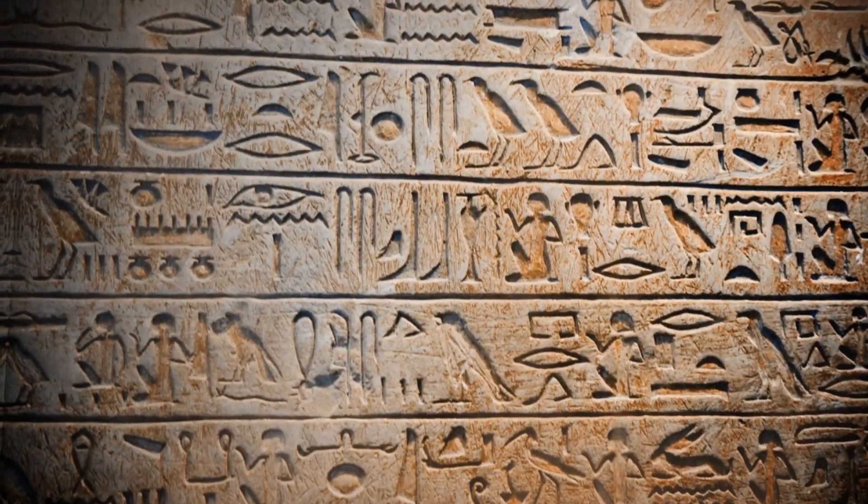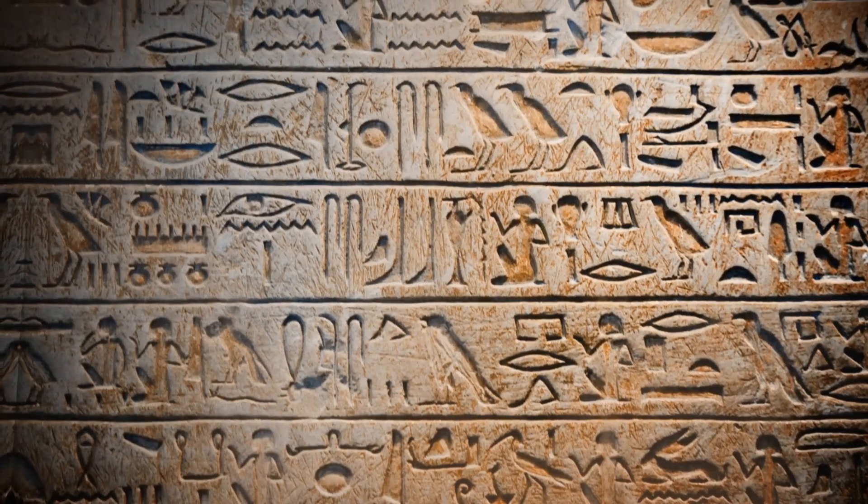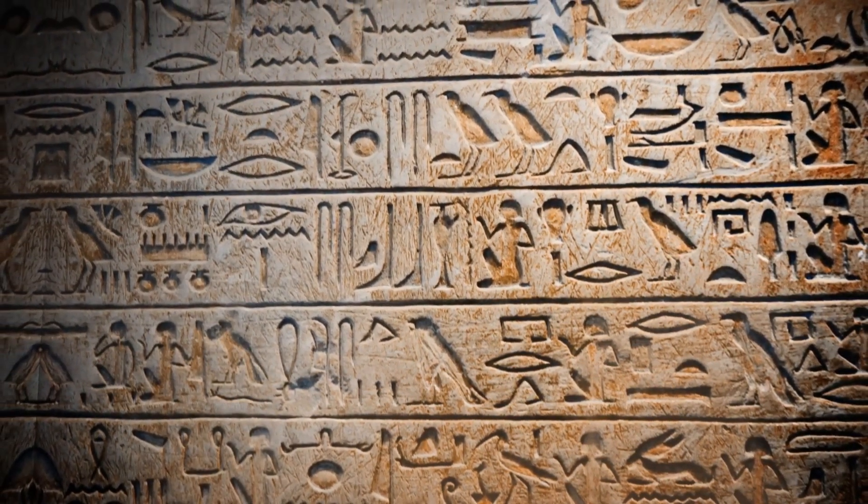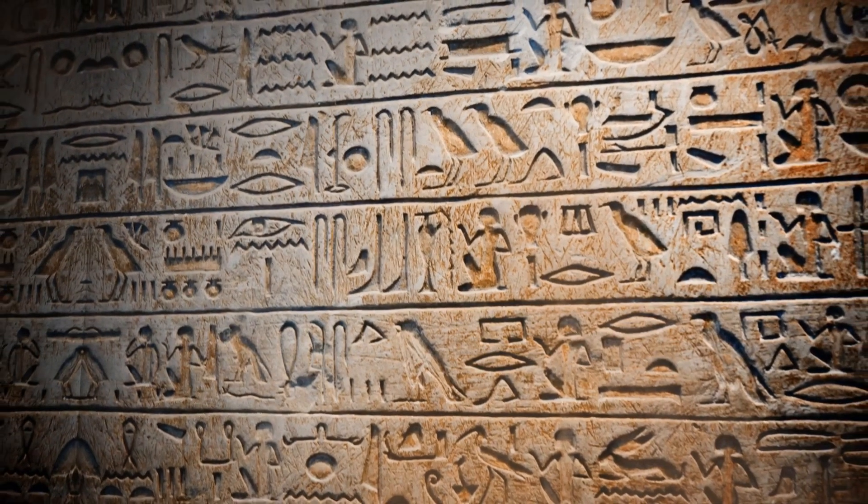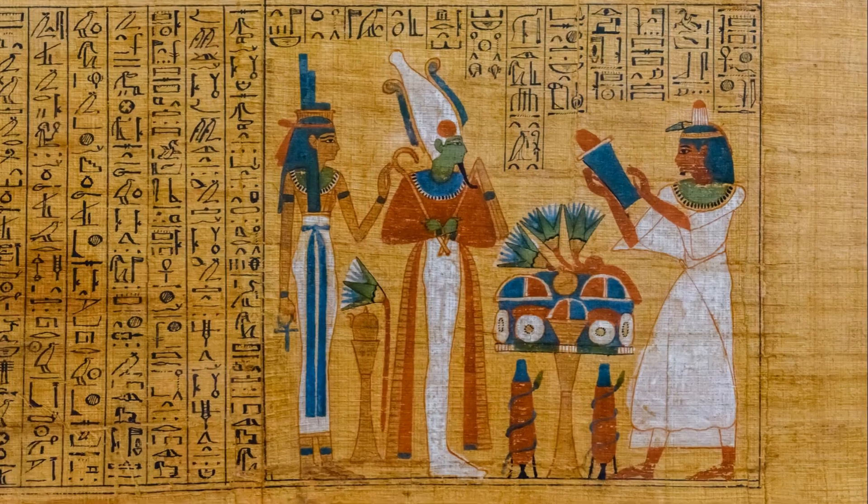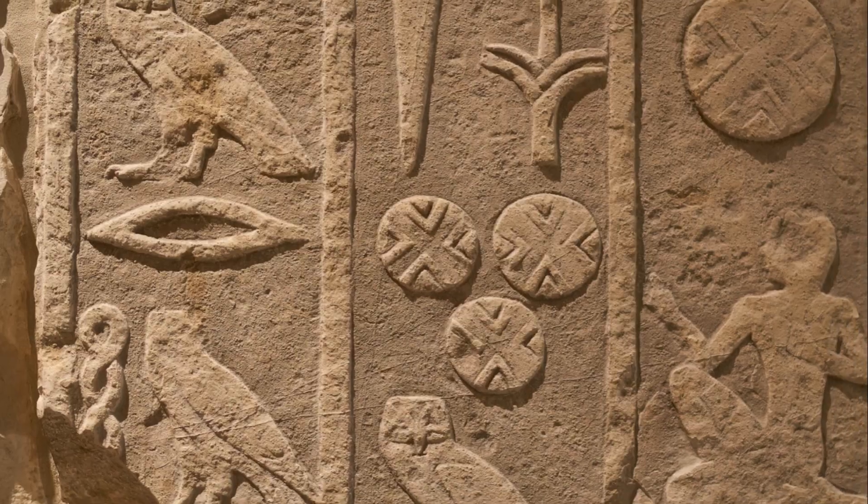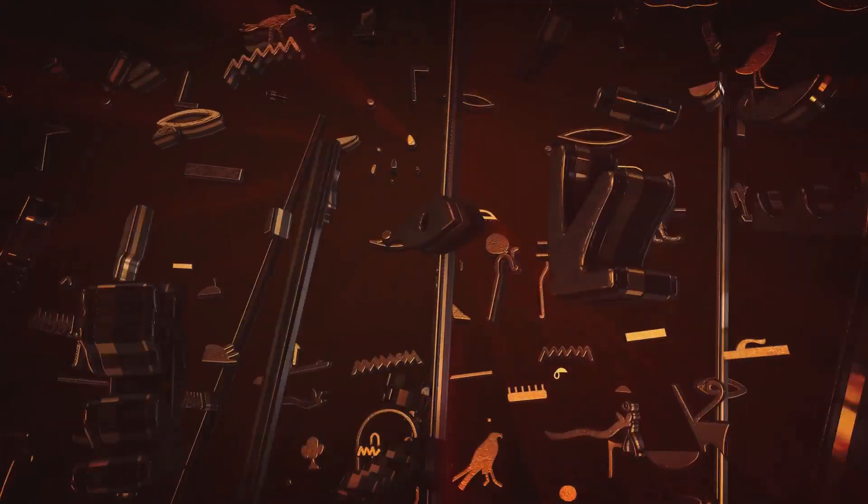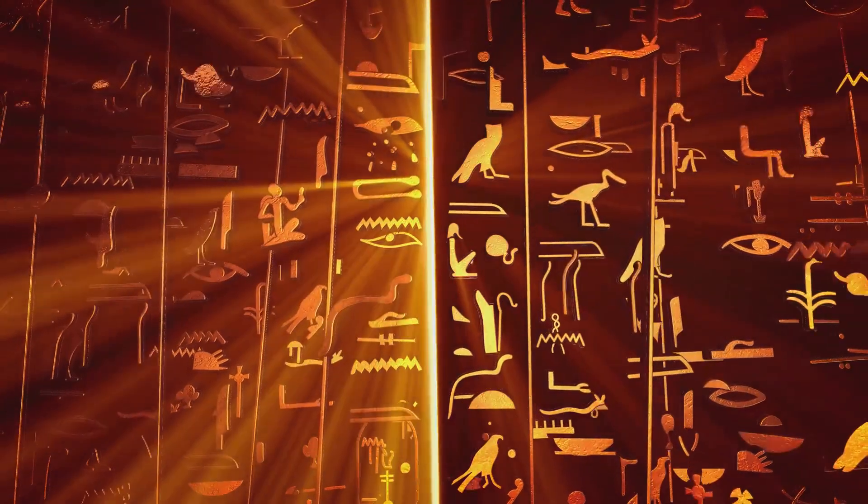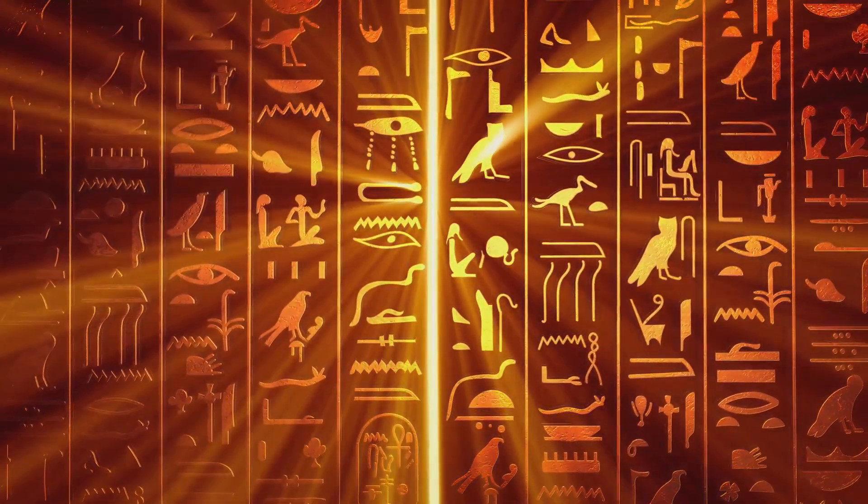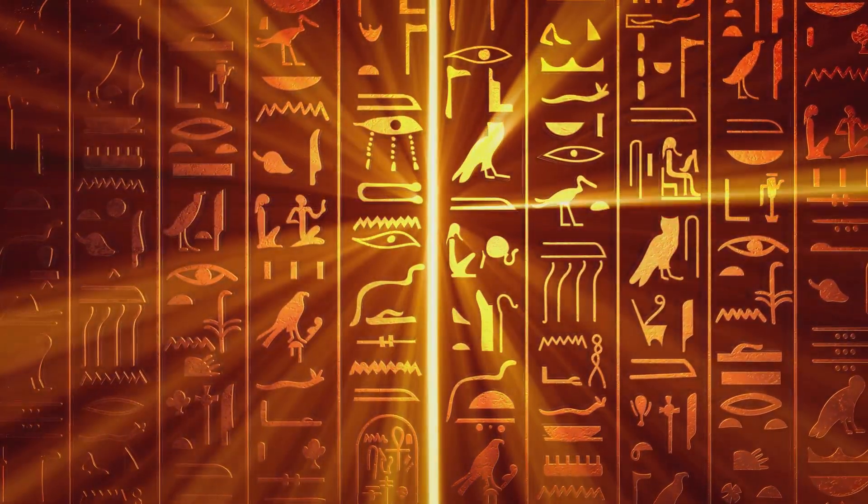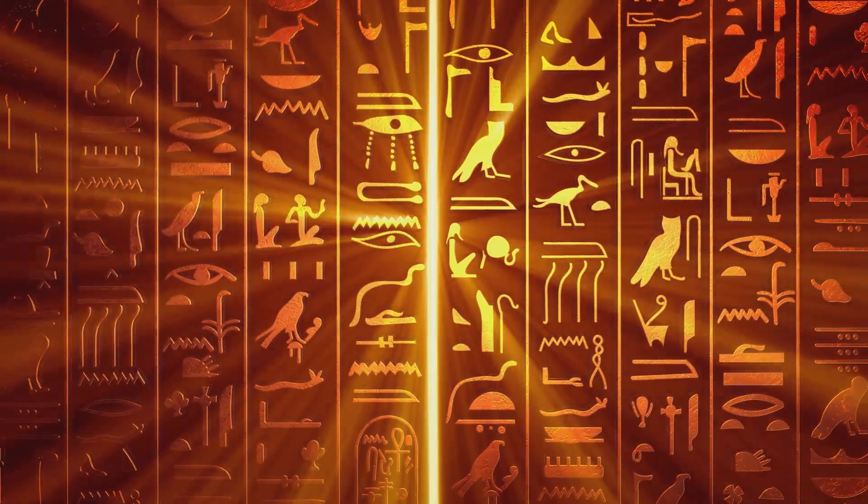The Rhind Mathematical Papyrus, dating back to 1650 BC, is a treasure trove of ancient Egyptian mathematics. This remarkable document, named after the Scottish antiquarian who purchased it in the mid-nineteenth century, Alexander Henry Rhind, is a testament to the mathematical prowess of the ancient Egyptians. Residing now in the British Museum, the Papyrus is a prized piece of history, filled with intriguing problems and solutions that have fascinated scholars for centuries.